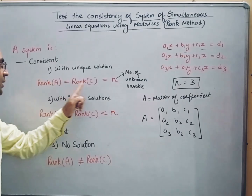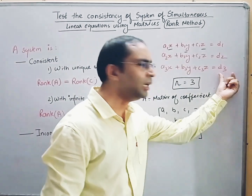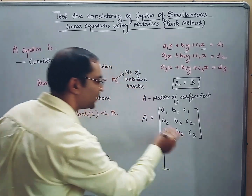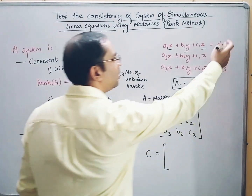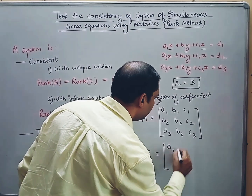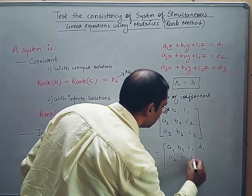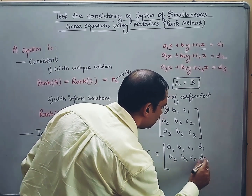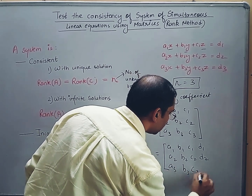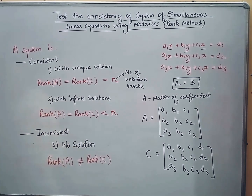Matrix C is the augmented matrix, formed using the coefficients and the solution column. We simply add one more column to matrix A — the column of solutions. It becomes: A1, B1, C1, D1 in the first row; A2, B2, C2, D2 in the second row; and A3, B3, C3, D3 in the third row. This is the augmented matrix.